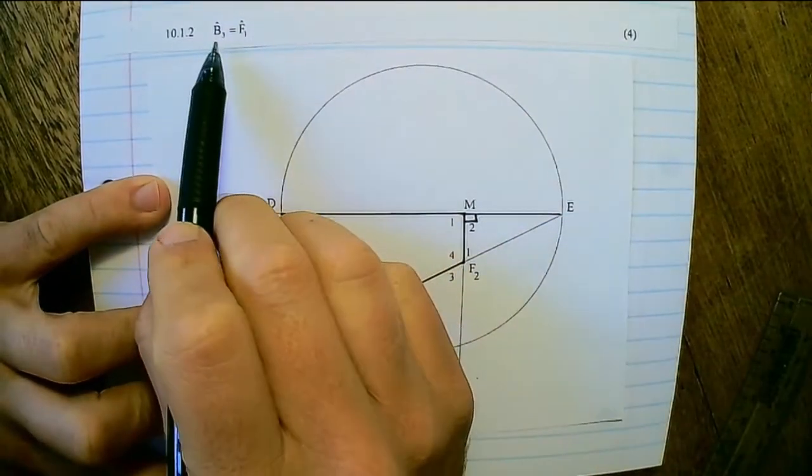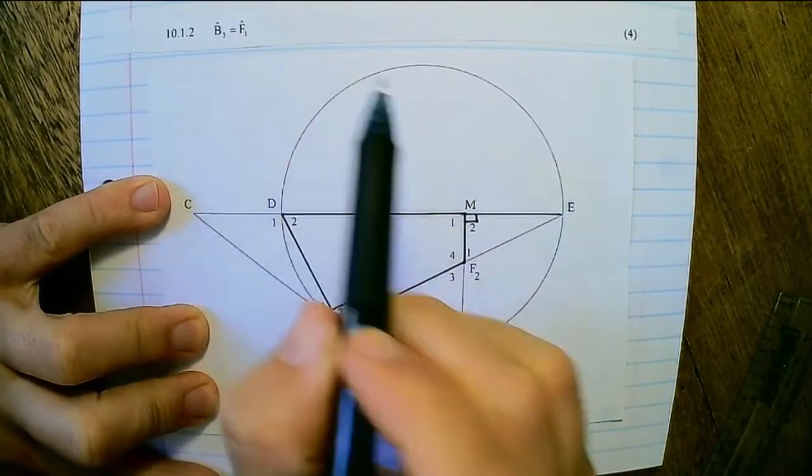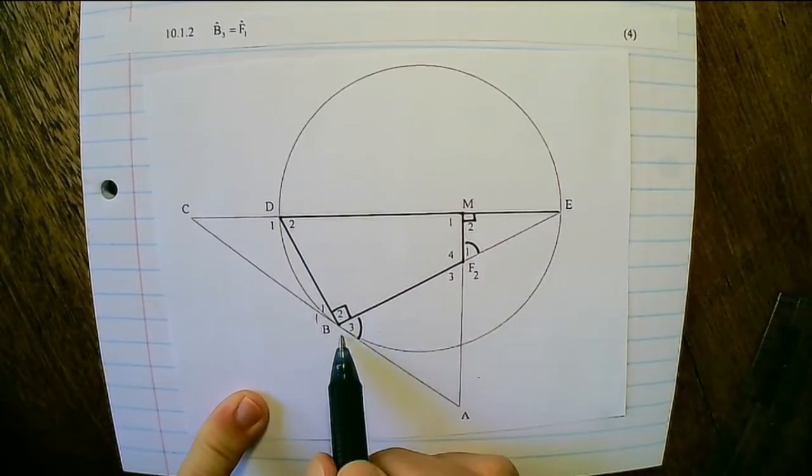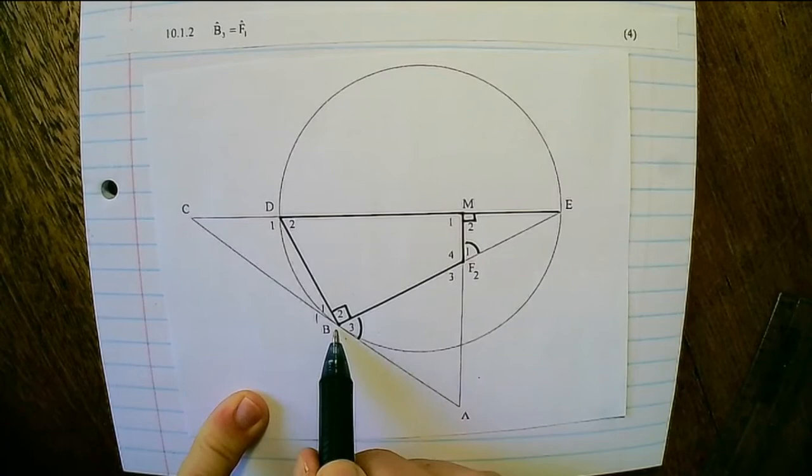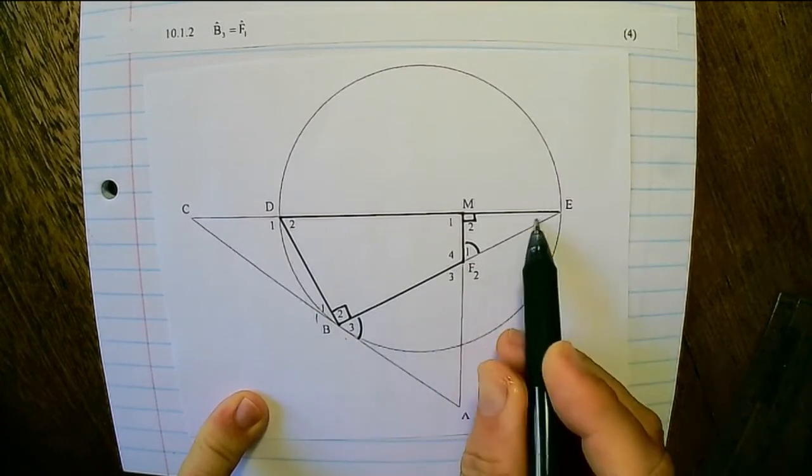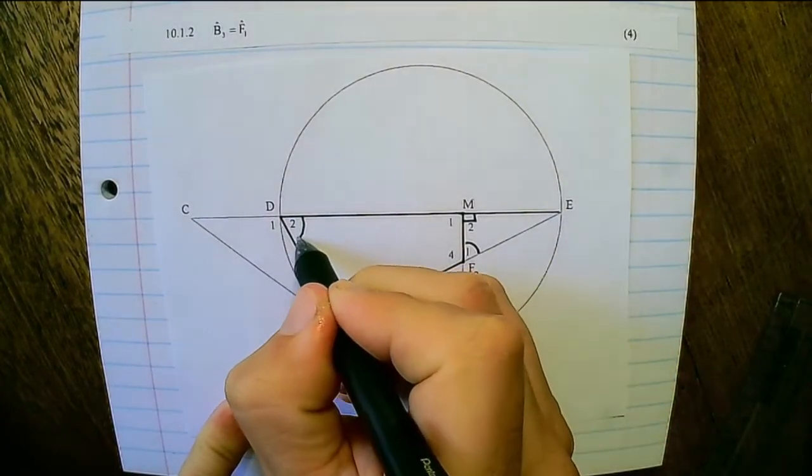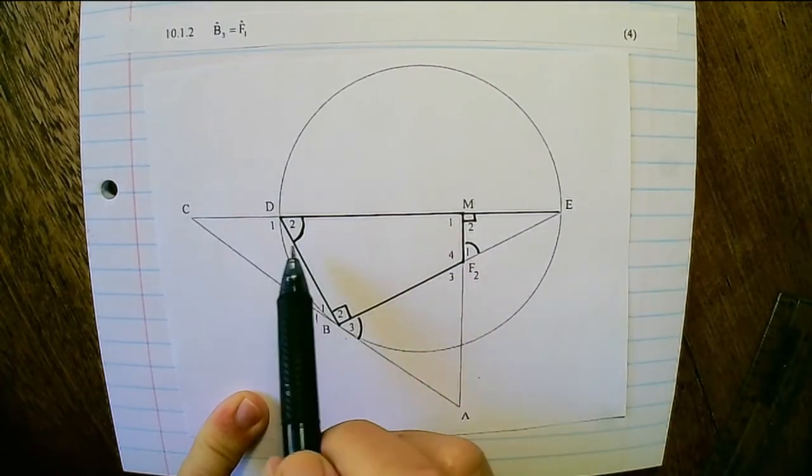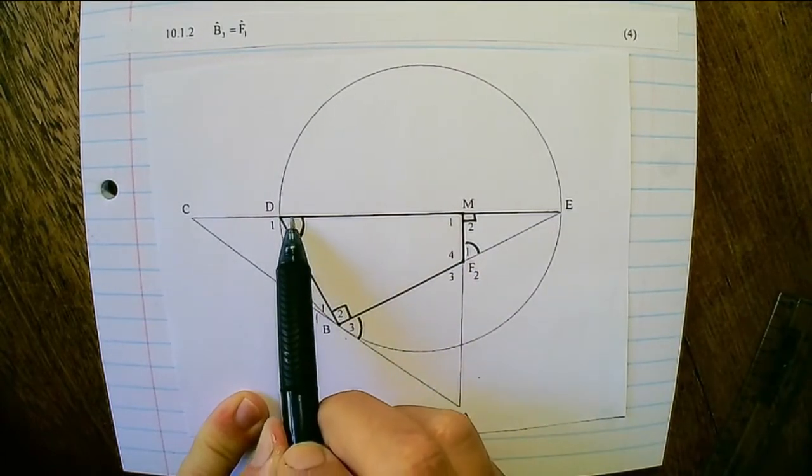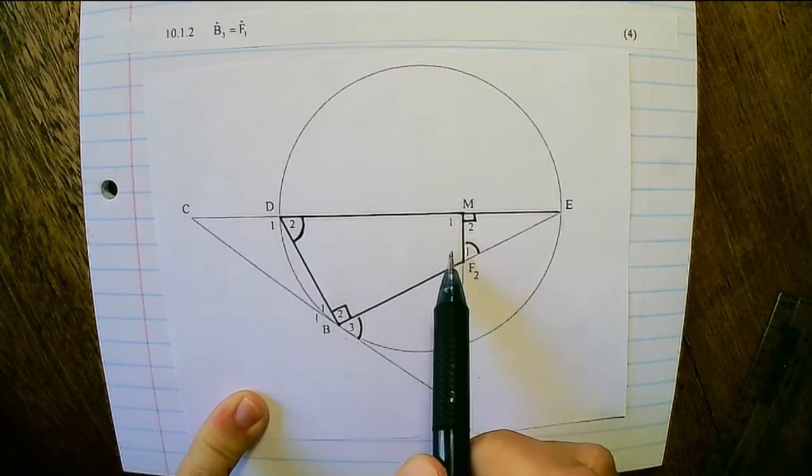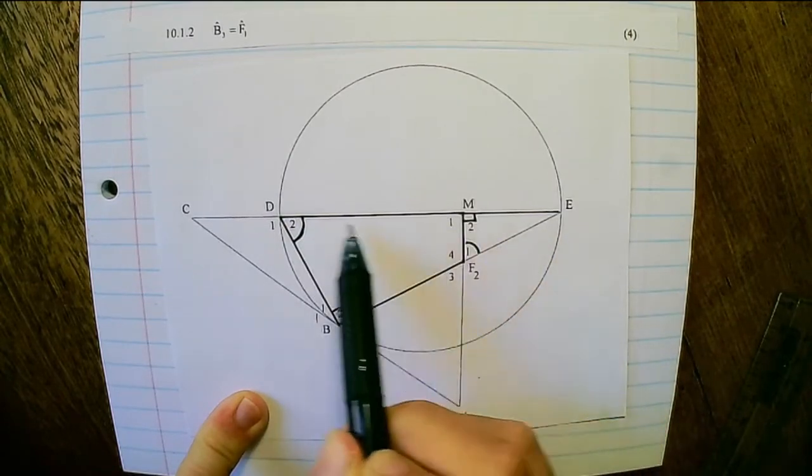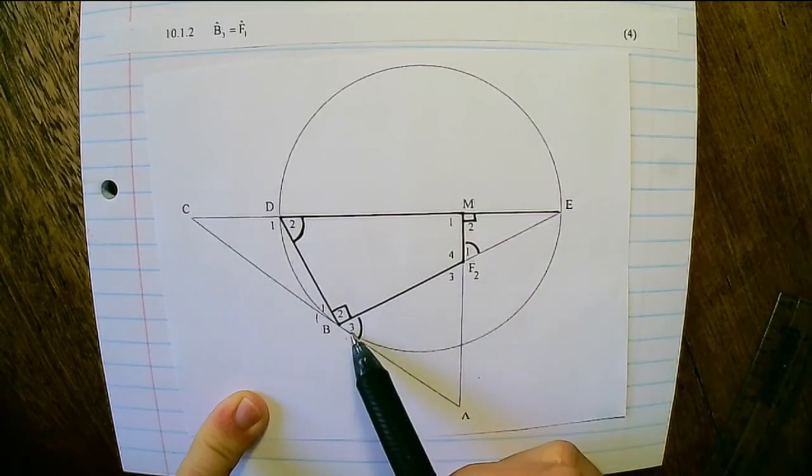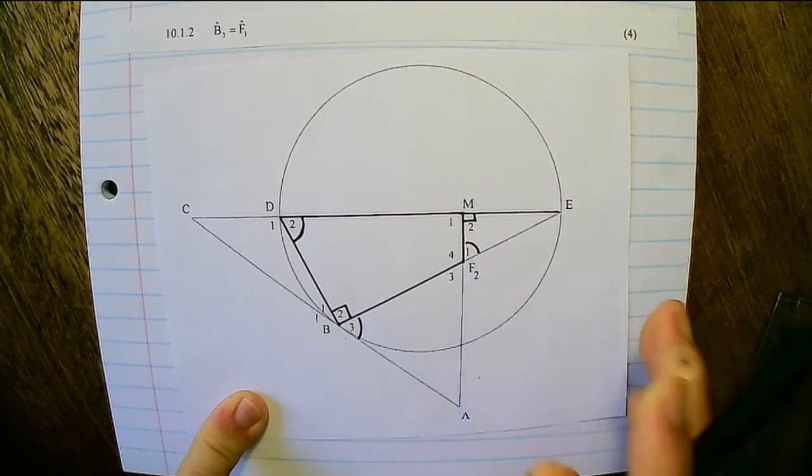Next, we want to prove that B3 is equal to F1. So I can see that B3, which is the angle between a tangent and a chord, is equal to angle D2, which will be tan-chord. Also I could say that angle D2 is equal to angle F1, exterior angle of a cyclic quad, and therefore B3 would be equal to F1.